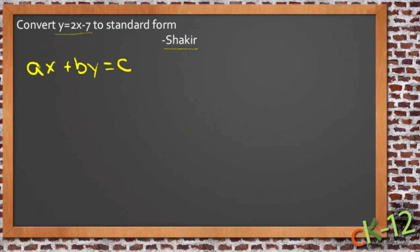Shakir, the standard form of a linear equation is ax plus by equals c, and specifically that coefficient a is positive. What that means is that in order for it to be written in standard form, x and y both have to be on one side of the equation.